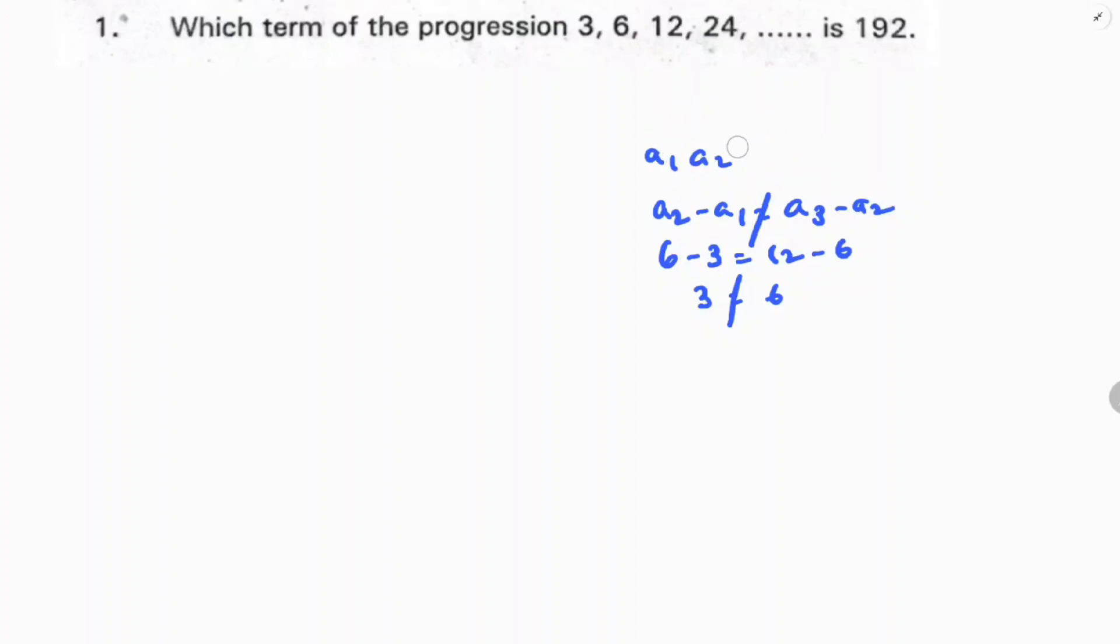For GP, it is clearly in GP. First we will check whether it is in GP or not. So here, 3, 6, 12, and so on, labeled a1, a2, a3. If a2 by a1 equals a3 by a2, then it is in geometric progression.